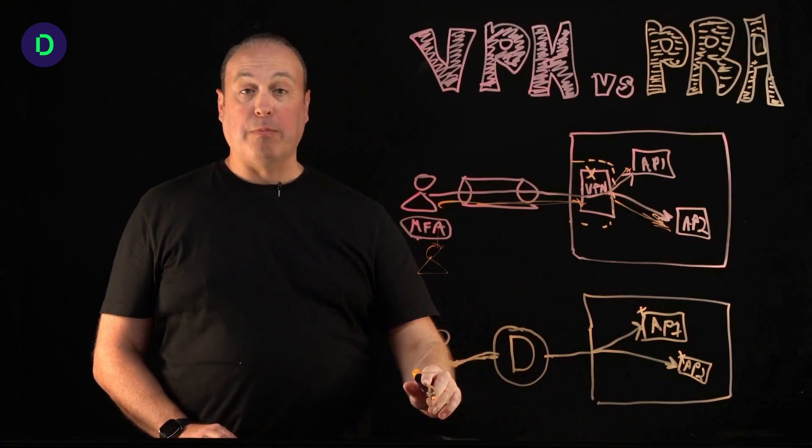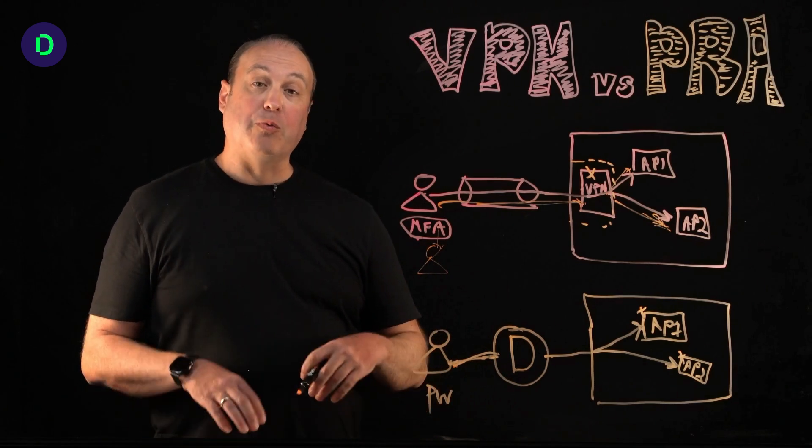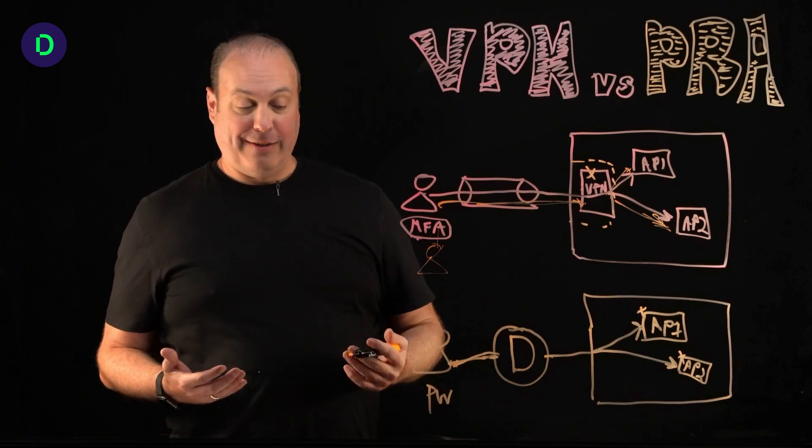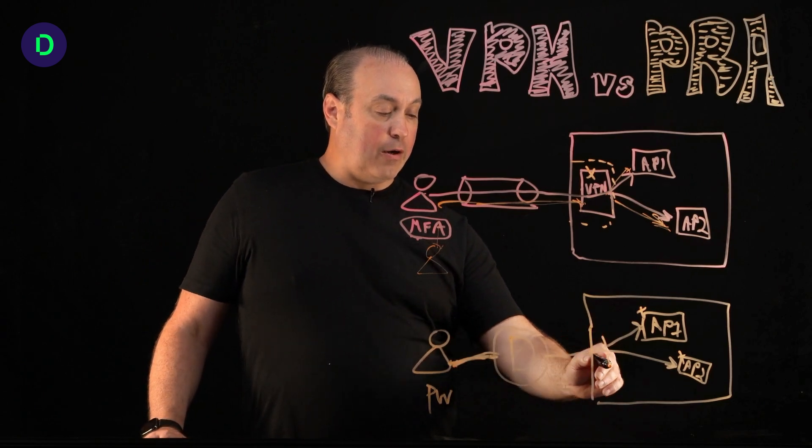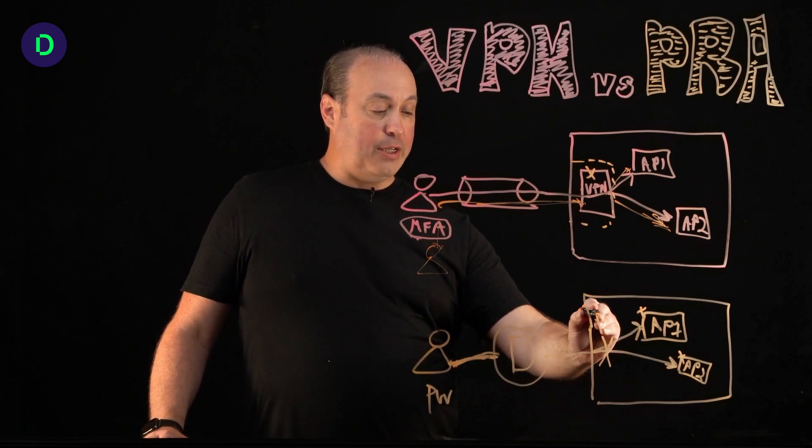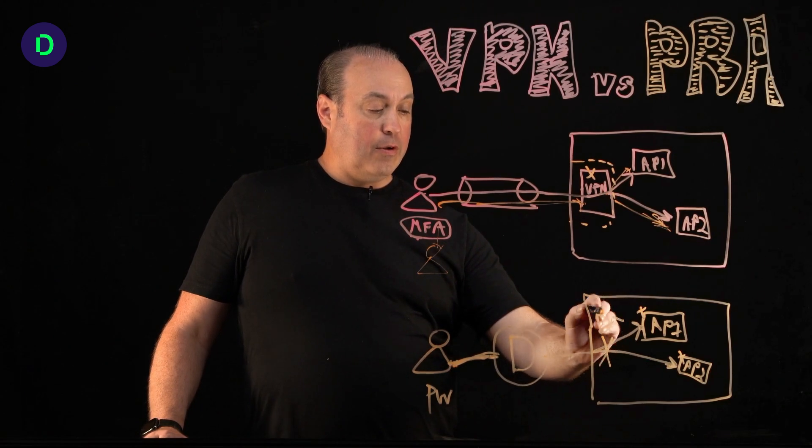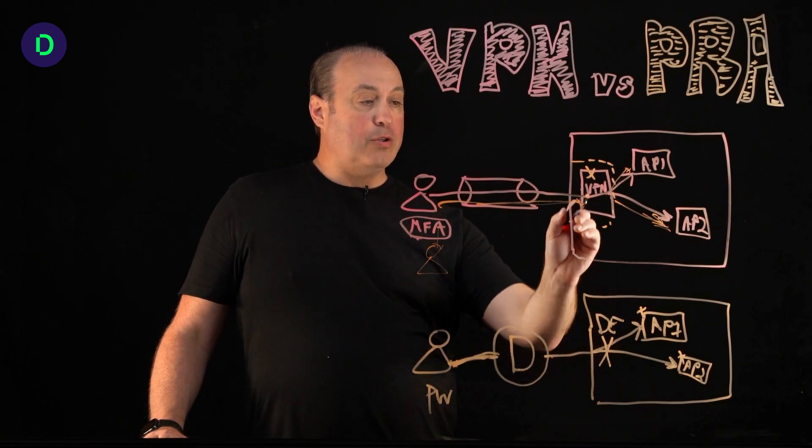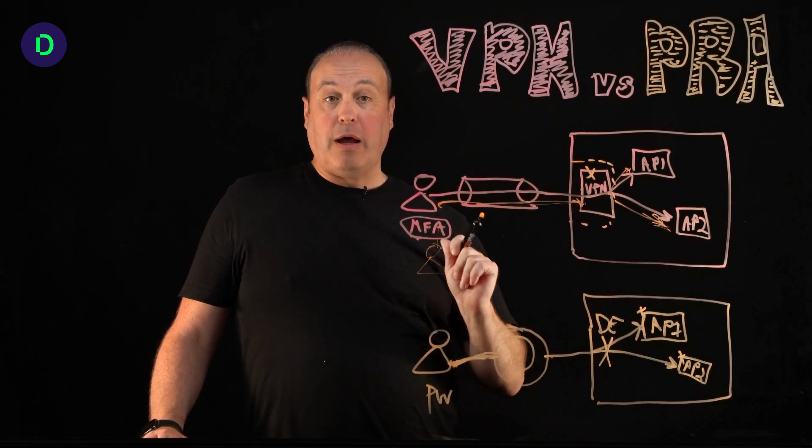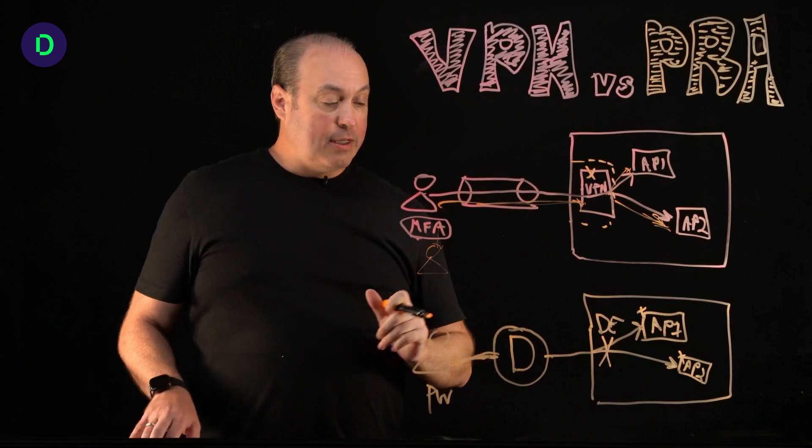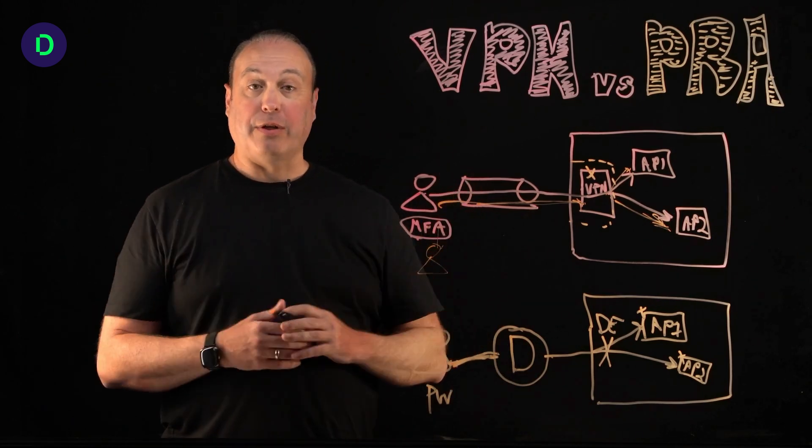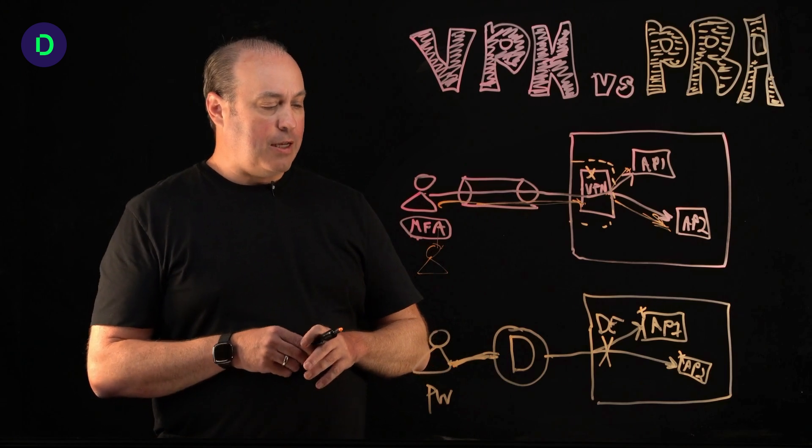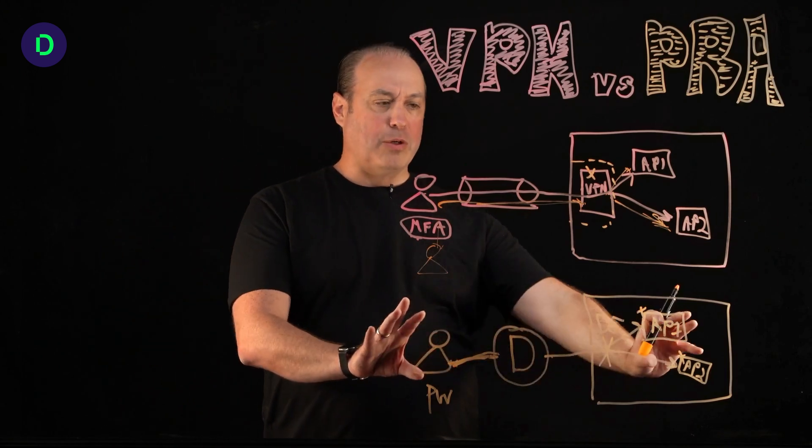And not have a password, by the way, for the user to reset or forget. So much better way. And also you'll notice here, there is the Delinea engine is here, but there is no server or appliance, a VPN appliance, sitting in the DMZ that can be proxied and potentially compromised. So that's a number of different problems are solved here.